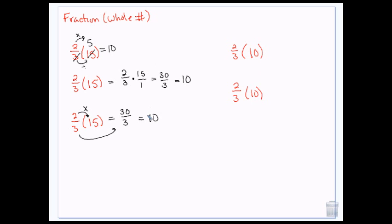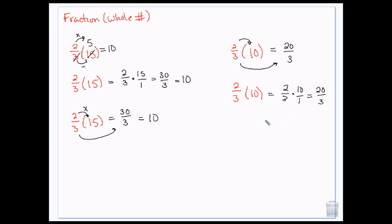When you have a situation where it won't divide evenly — 3 doesn't go into 10 — I can either do the straight multiplication and carry over my denominator, or I can make this 2 thirds times 10 over 1, which will still give me the same answer: 20 thirds. So there's a couple different ways to look at it, and you can just pick the one that works best for you.